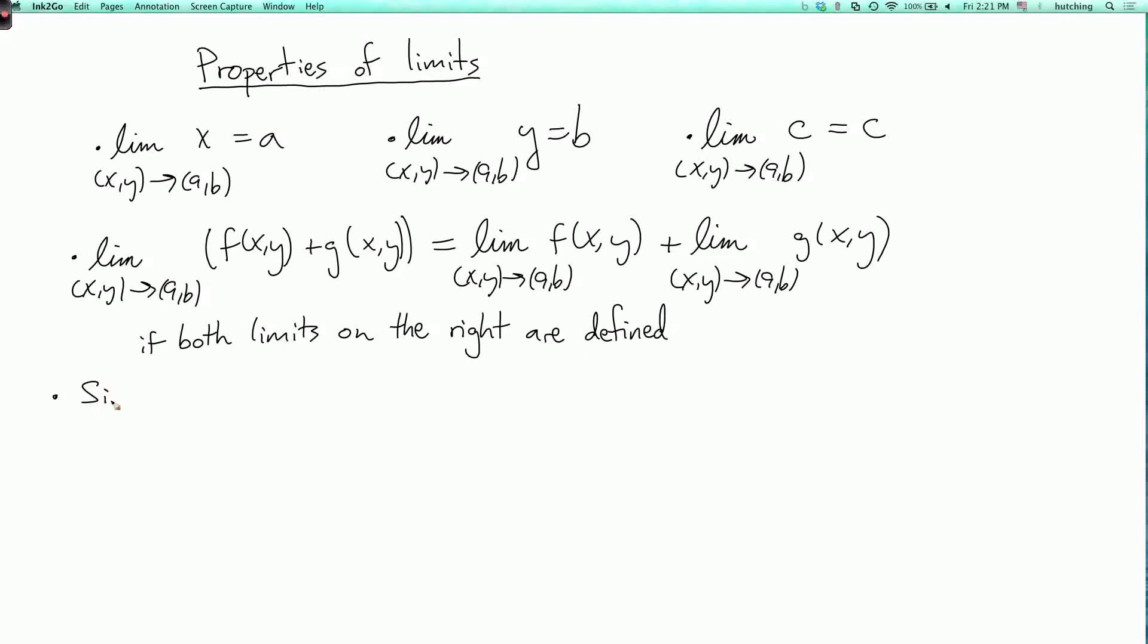And similarly, just in shorthand, the limit of a product fg is the limit of f times the limit of g, assuming that both the limit of f and the limit of g are defined. And the limit of f over g is the limit of f over the limit of g, if both the limit of f and the limit of g are defined, and also the limit of g is not equal to zero.